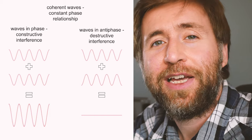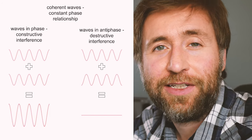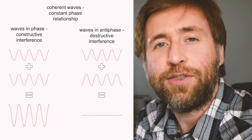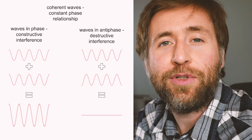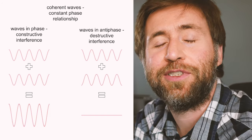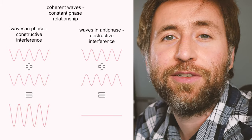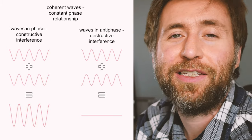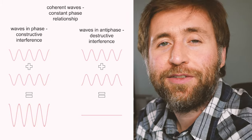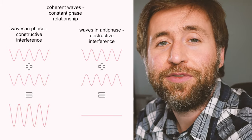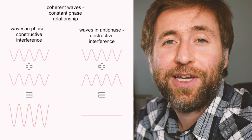This all goes back to path difference and phase difference. Those bright points are where the path difference is a multiple of the wavelength, so the laser light arrives in phase — giving constructive interference and a bright spot.